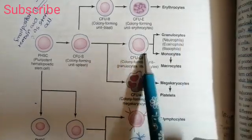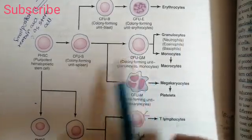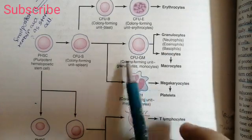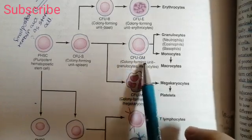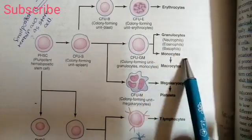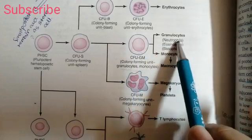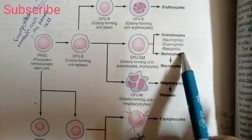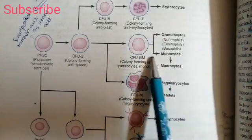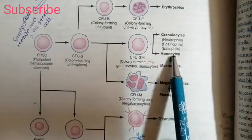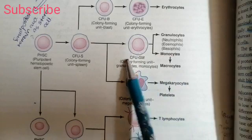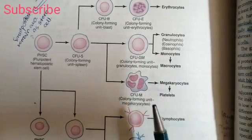Another colony forming unit from the spleen is the granulocyte-monocyte unit, the CFU-GM. This CFU-GM gives rise to granulocytes or monocytes. The granulocytes can be divided into neutrophils, eosinophils, and basophils — the different types of WBCs that will be discussed in a separate video. Alternatively, this unit can develop into a monocyte, which is then going to convert into a macrophage, the mature cell that develops from the CFU-GM precursor.